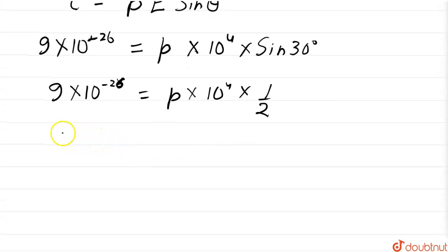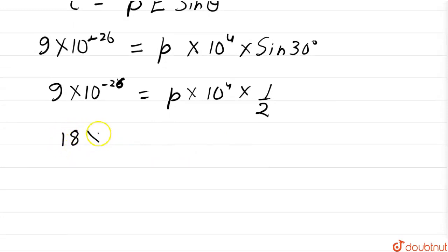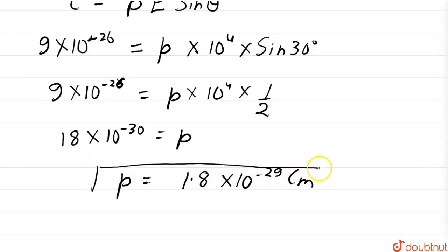Upon cross multiplying we get 18×10^(-30) equals p, or we can write p equals 1.8×10^(-29) coulomb meter. So, this is our magnitude of the dipole moment.